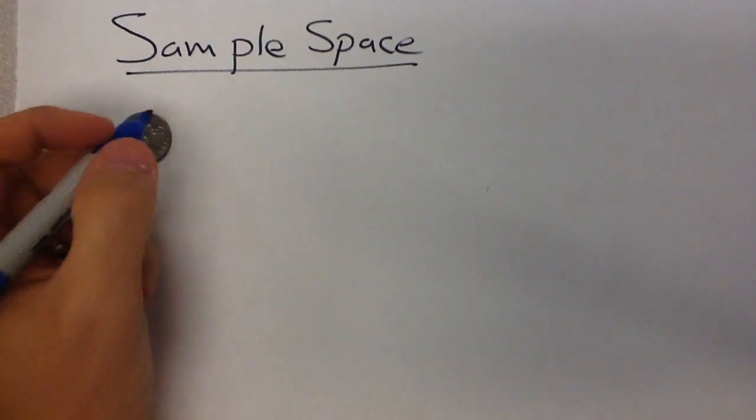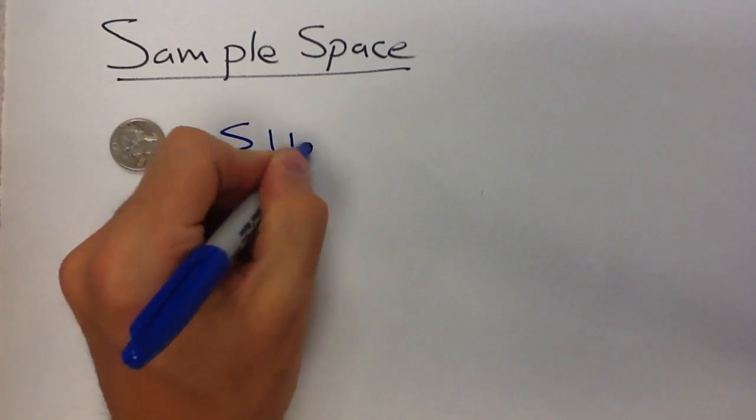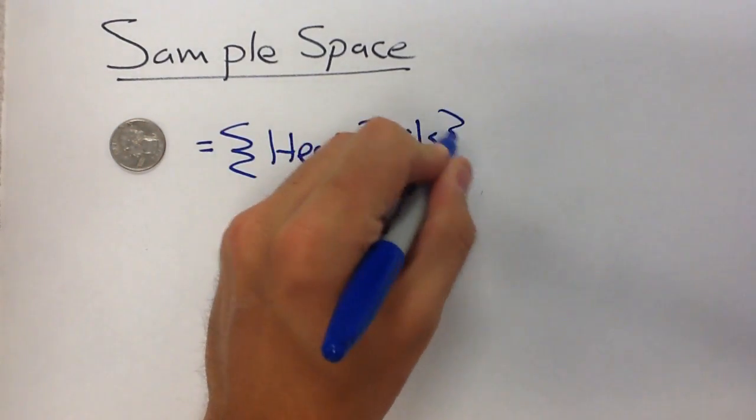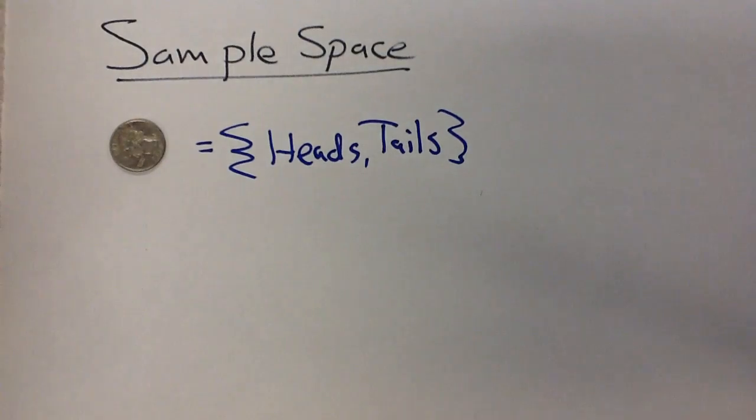So let's talk about sample space. Sample space is your list or set of all possible outcomes that we have. Probably the most popular way we introduce sample space is by flipping a coin. So if we looked at any coin, the sample space for that is going to be heads or tails. I'm not going to flip a coin and get something other than those.